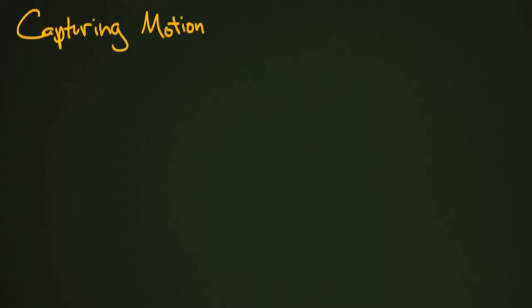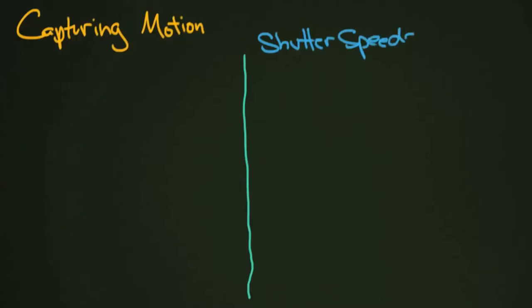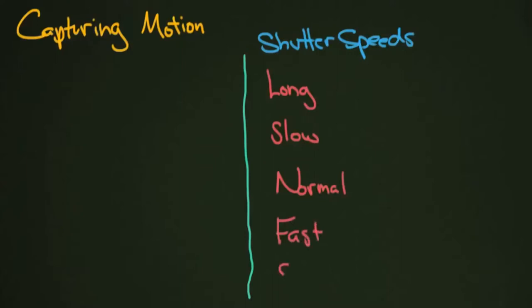Let's start by reviewing something from our shutter speed lesson, and to some degree our ISO lesson. I'm going to divide the page in half. When talking about shutter speeds, I divide them into: long shutter speeds, slow shutter speeds, normal shutter speeds, fast, and then super fast — though 'super fast' is more of a personal label and not necessarily important to memorize.